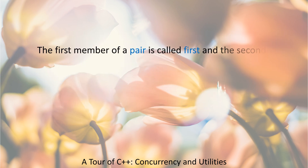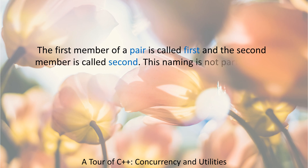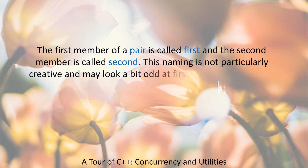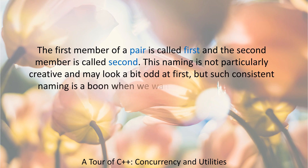The first member of a pair is called first and the second member is called second. This naming is not particularly creative and may look a bit odd at first, but such consistent naming is a boon when we want to write generic code.